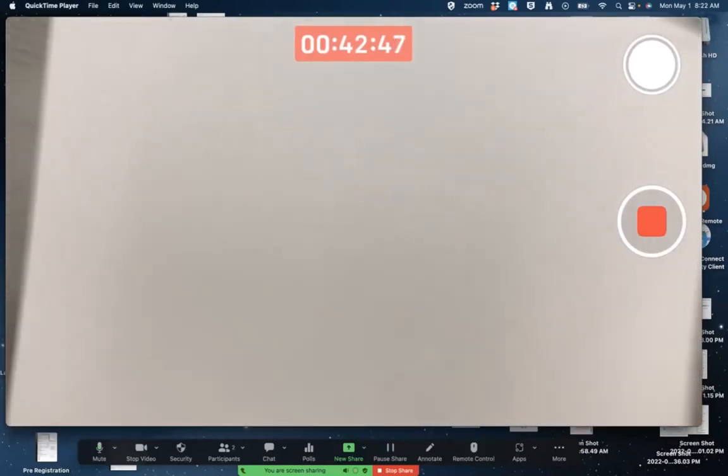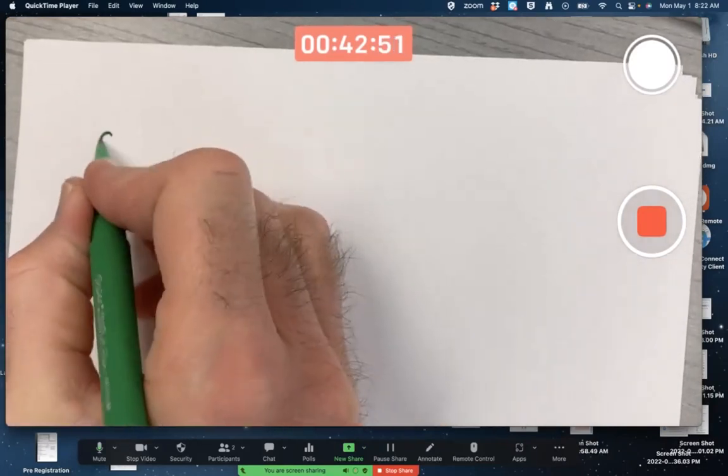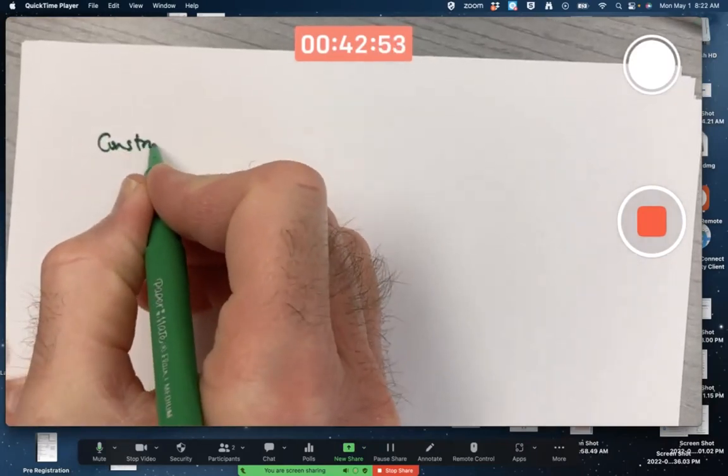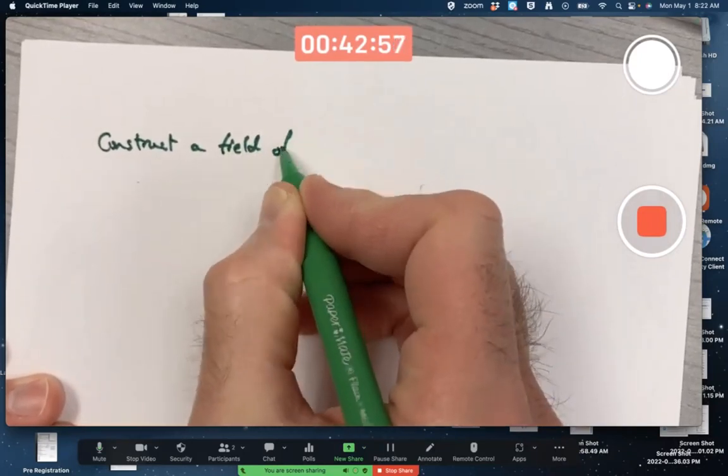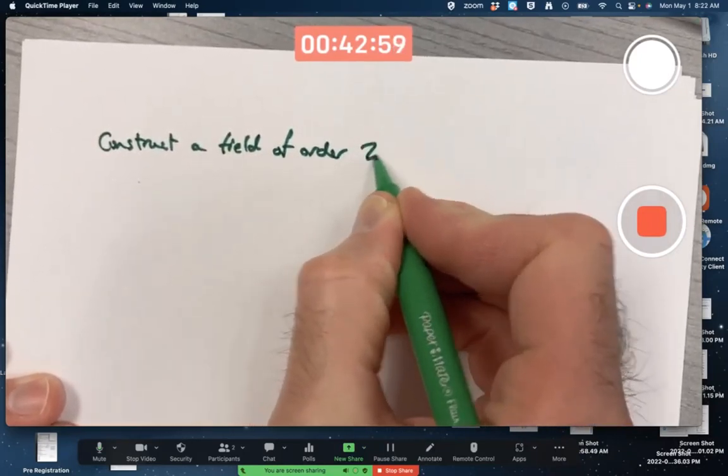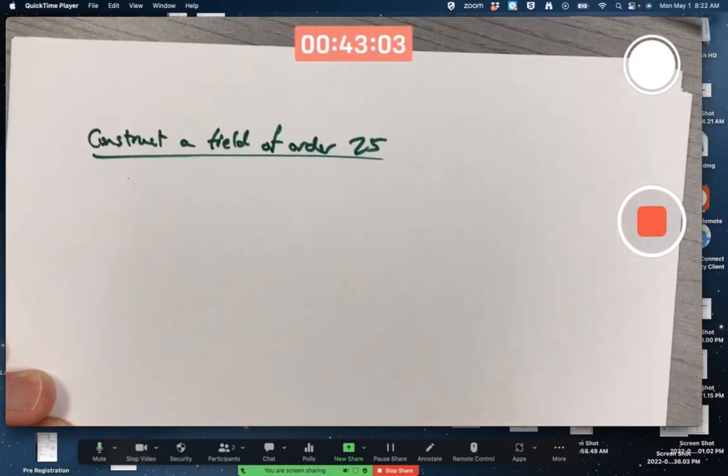All right, let's give one of those a try. Maybe even both of them. Construct a field of order 25. How in the world are we going to do this? First thing to realize is the way to do this is to make it as a factoring, a certain factoring.